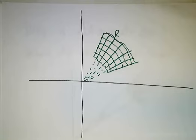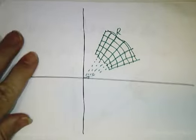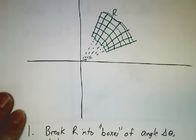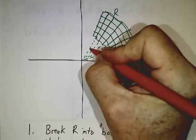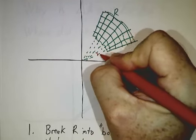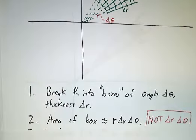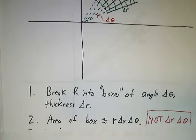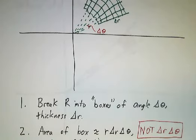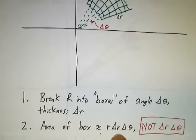So we break things up into things that are kind of like boxes. They're called polar boxes, polar rectangles. Each polar rectangle will have an angle of delta theta and each box will have a thickness of delta r. Except that the area of a box is not delta r times delta theta. Delta theta is an angle, not a length. We'll see in a couple minutes that the area of the box is r times delta r times delta theta.